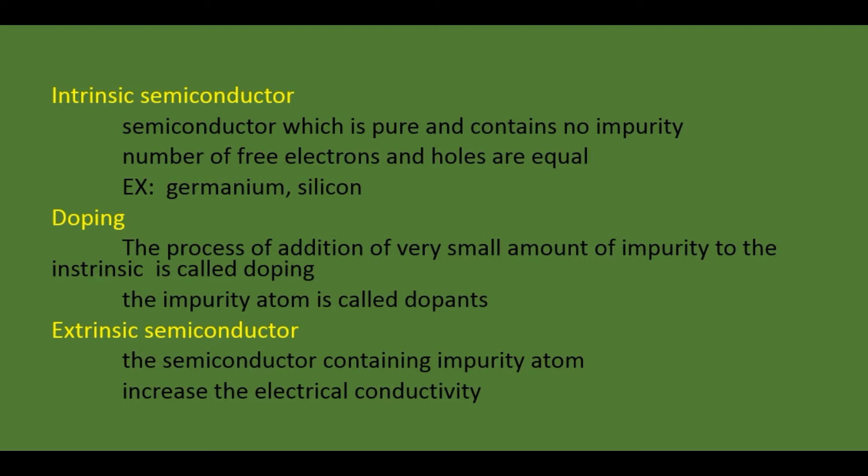The next concept is extrinsic semiconductor. An extrinsic semiconductor means a semiconductor containing impurity atoms — it is not a pure semiconductor. We add impurity atoms to the pure semiconductor to increase its electrical conductivity. That type of semiconductor is called the extrinsic semiconductor.